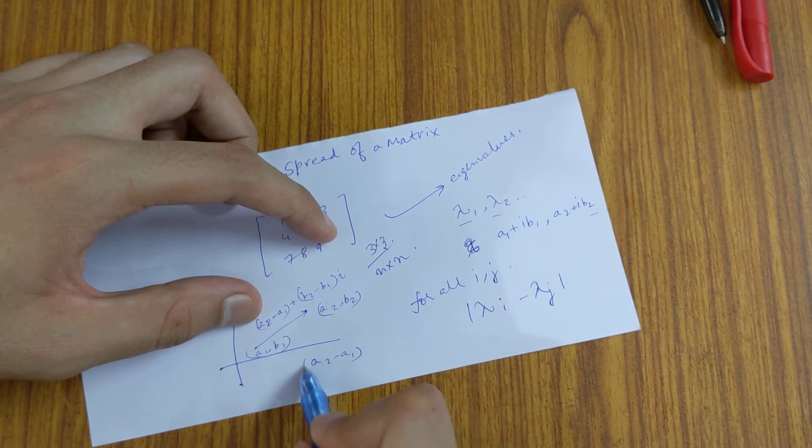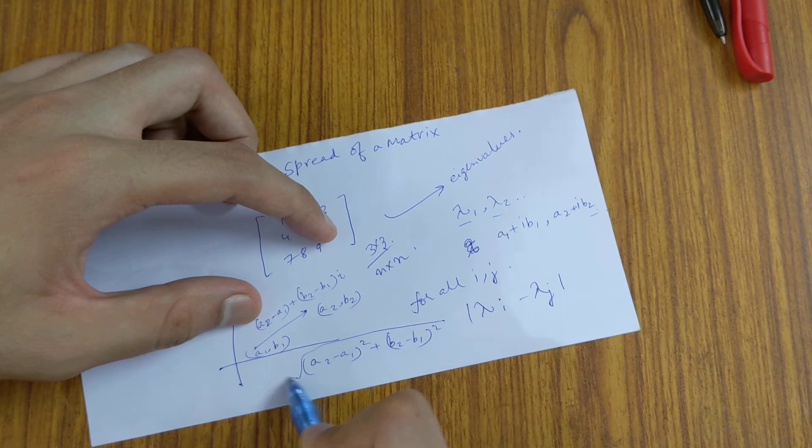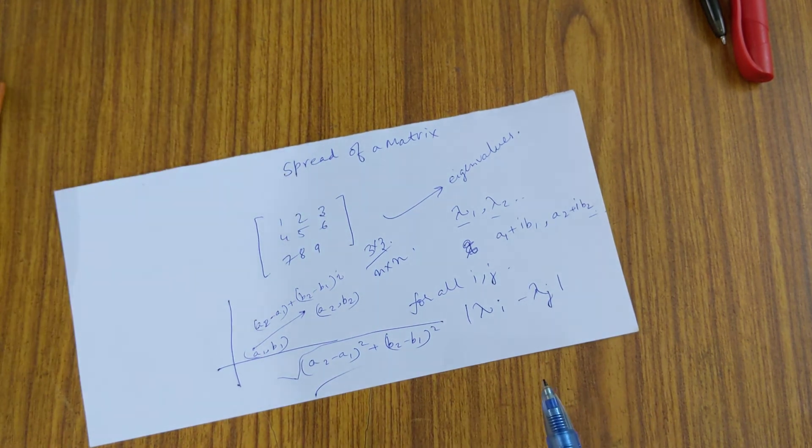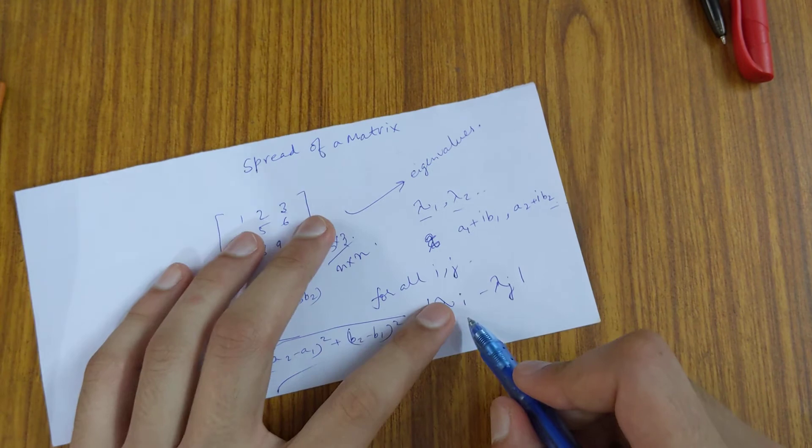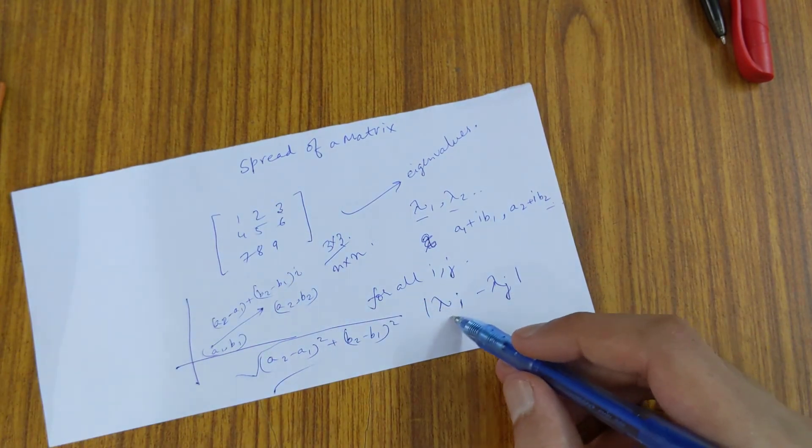Will be a2 minus a1 whole square plus b2 minus b1 whole square, whole root. So this will be the magnitude. We compute these magnitudes for all the various pairs of lambdas, for example lambda i's and lambda j's.